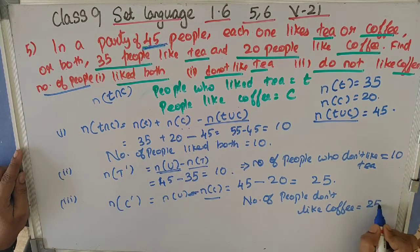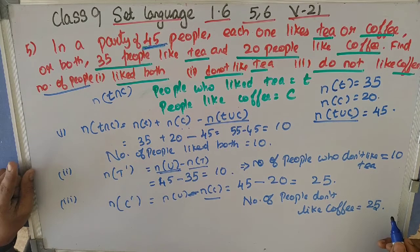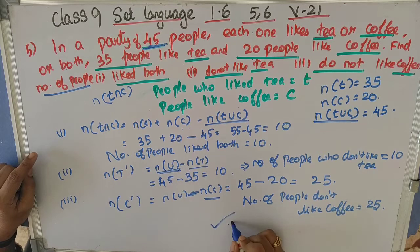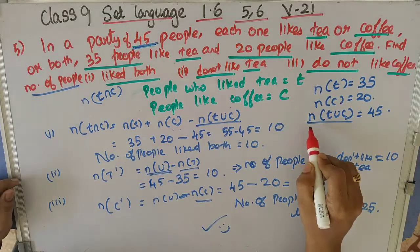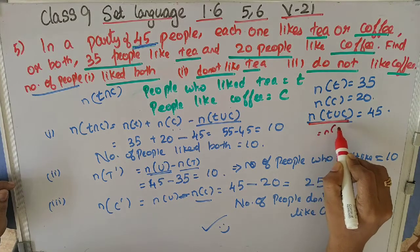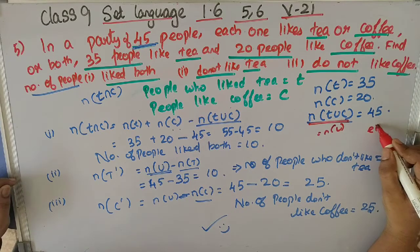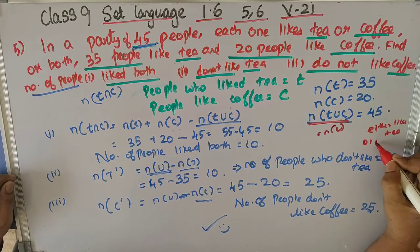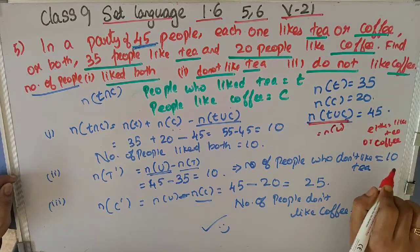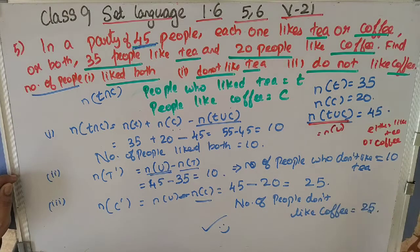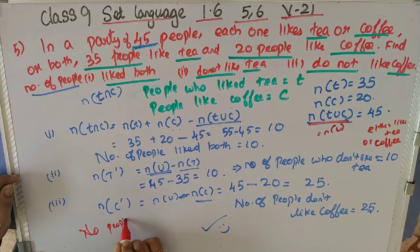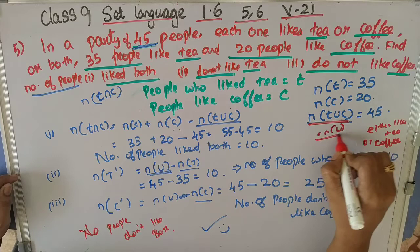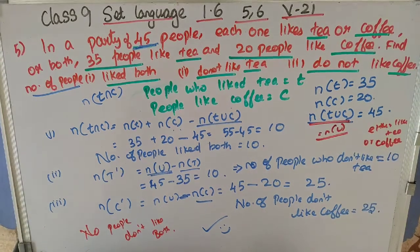Let me explain why I took the universal set as N of T union C. In these 45 people, there is no person who hates both tea and coffee. Either they like tea or coffee or both. There is no person who doesn't like both tea and coffee. So all 45 people come within T and C, and we can take the universal set equal to T union C.